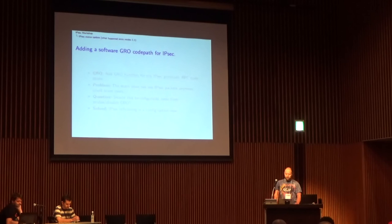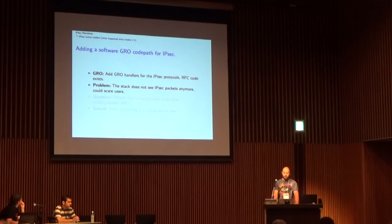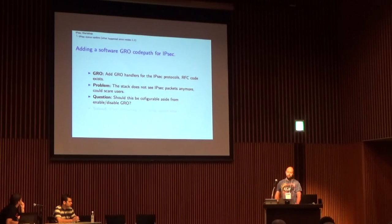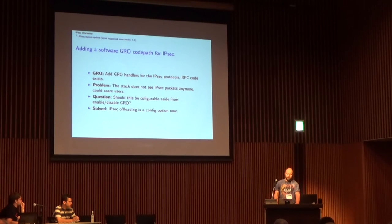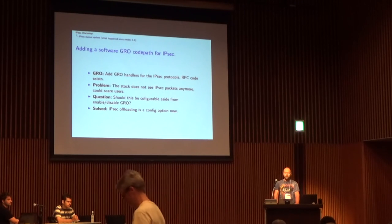Next, we wanted to add a GRO code path for IPsec. All we need is to add GRO handlers for the IPsec protocols. We had a problem to discuss: if we do that, we don't see the IPsec packets in the stack anymore, and we weren't sure if everyone was happy with that. The question was whether this should be configurable. We solved it by making IPsec GRO offloading a config option, so the user can choose.